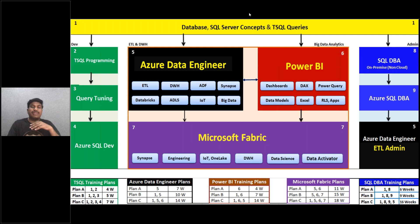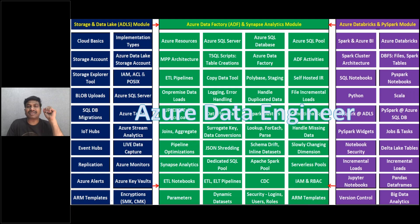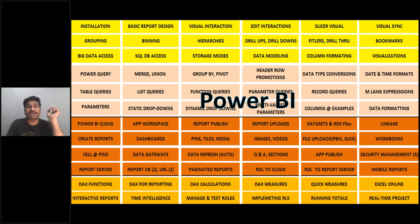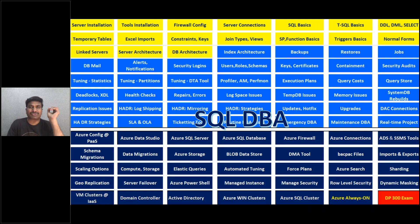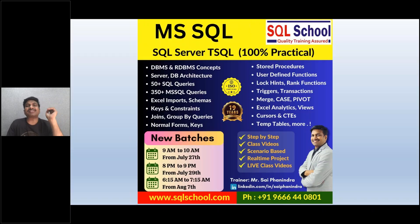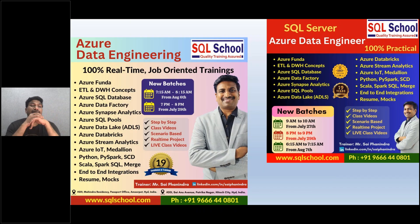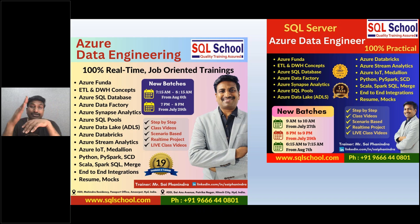Now let's get into the schedules. These are the detailed data engineering curriculum, Power BI curriculum, and DBA curriculum — you already have this on the website sqlschool.com. For SQL Server, we have upcoming schedules on the screen: about 50 queries on SQL basics and 350 queries on MSSQL concepts. For data engineering, you can choose either core data engineering schedules on the left of the screen, or SQL plus data engineering on the right side of the screen.